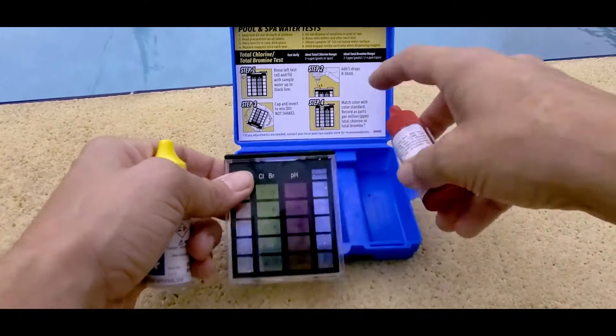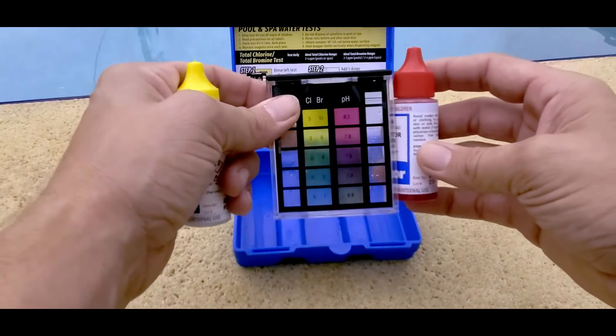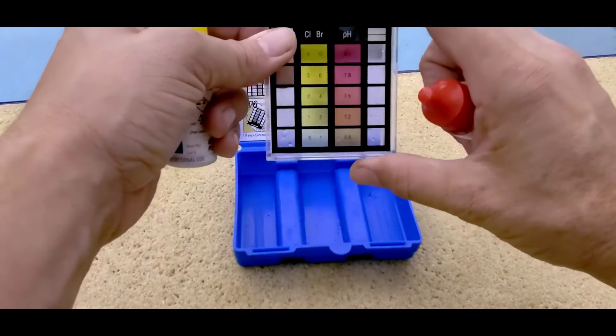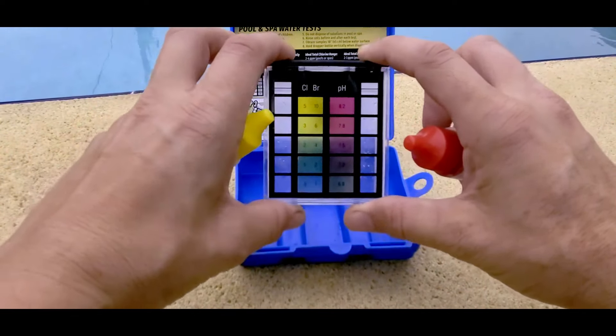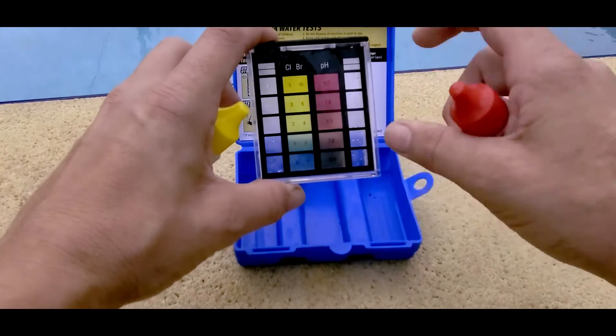And then you add five drops to the pH side of this solution. And then you can match up the colors and see which level your chlorine is at.